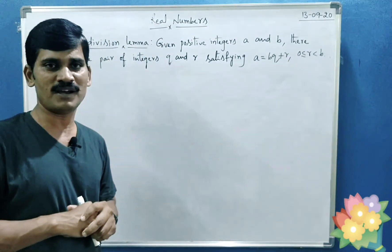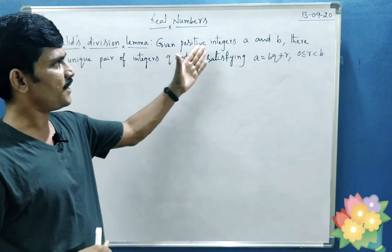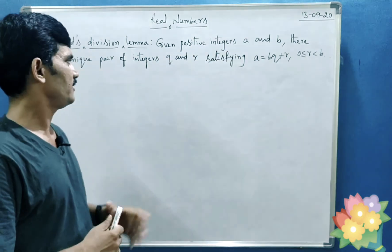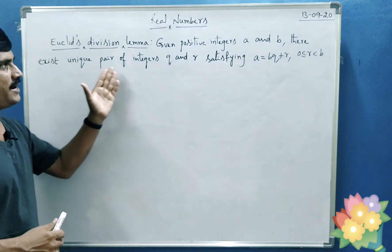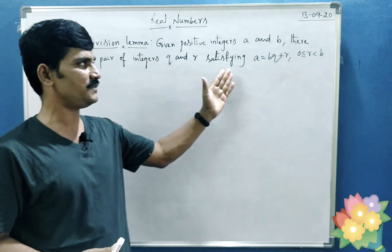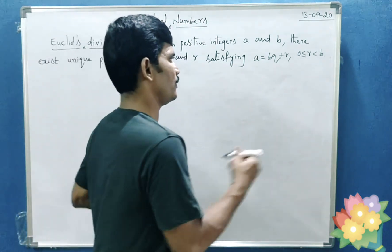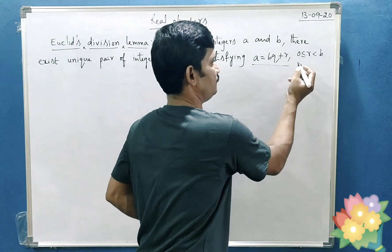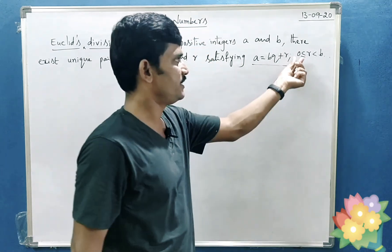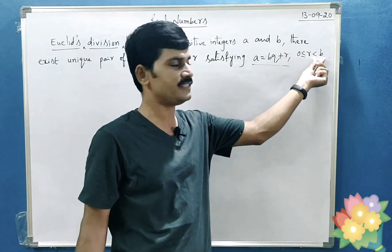What is Euclid's division lemma? Let us see. Given positive integers a and b, there exists a unique pair of integers q and r satisfying a equals bq plus r, where 0 is less than or equal to r less than b.